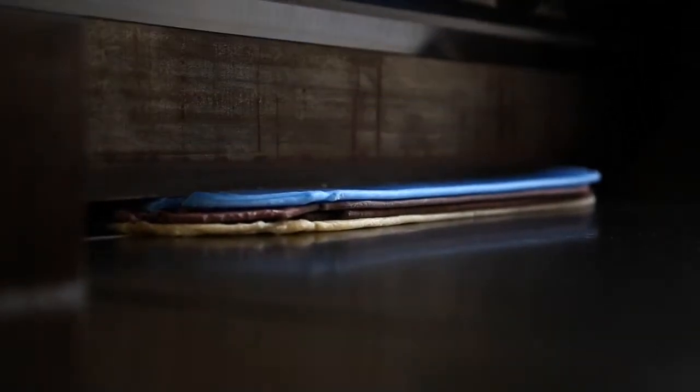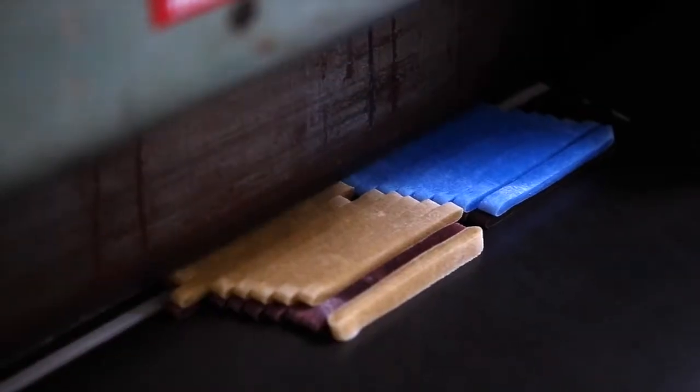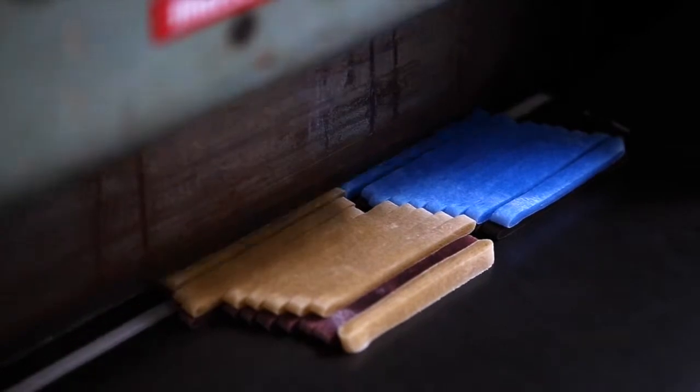Once the strips are ready they're layered together, placed in a machine and cut horizontally and then vertically to form small pieces.